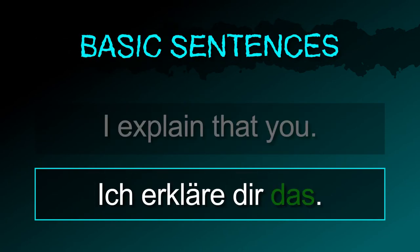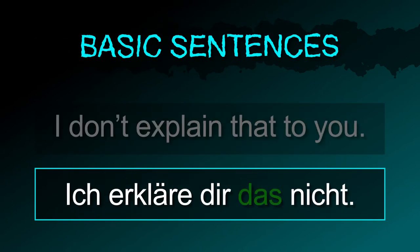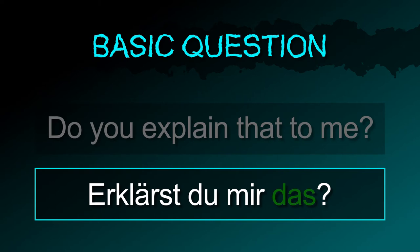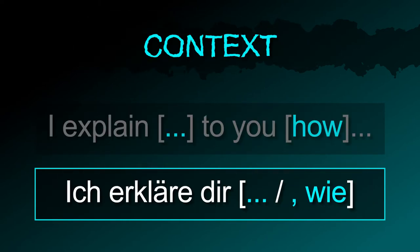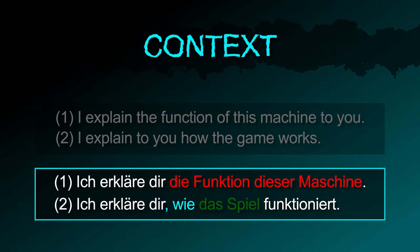Basic sentences: ich erkläre dir das. Ich erkläre dir das nicht. Basic question: erklärst du mir das? Two very common ways to say what you are explaining are either adding a noun or a comma with 'wie': ich erkläre dir die Funktion dieser Maschine. Ich erkläre dir, wie das Spiel funktioniert.